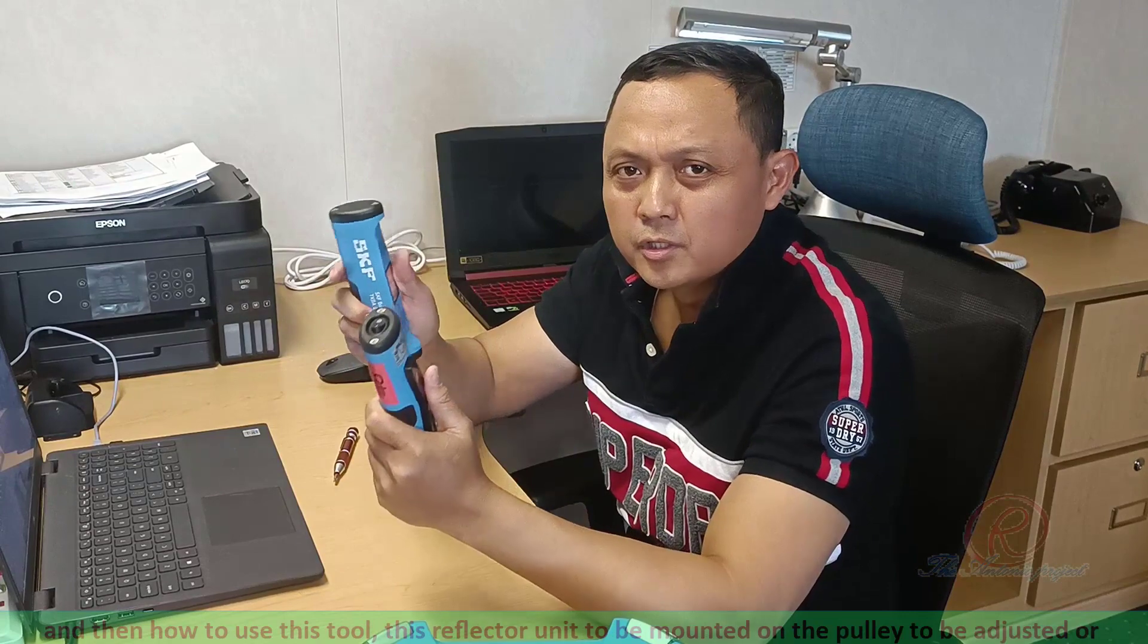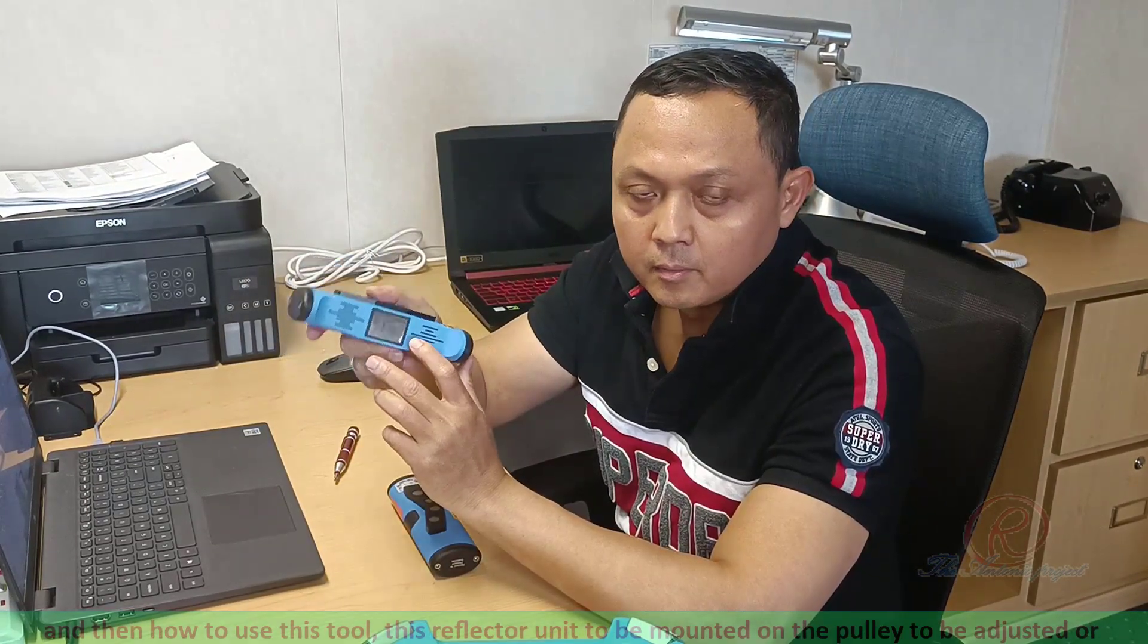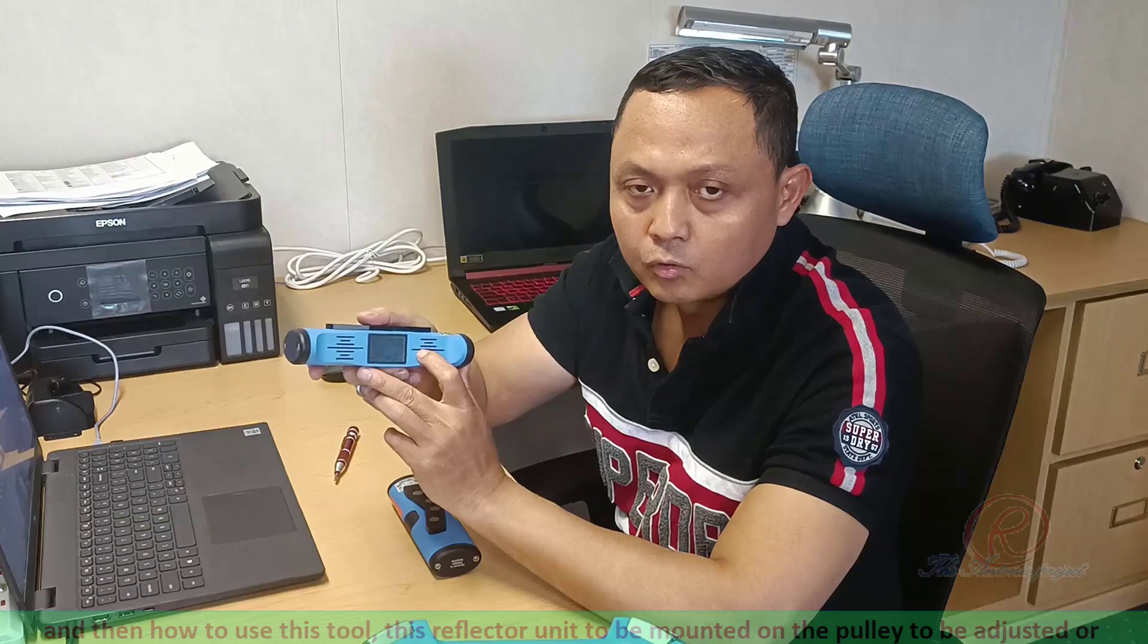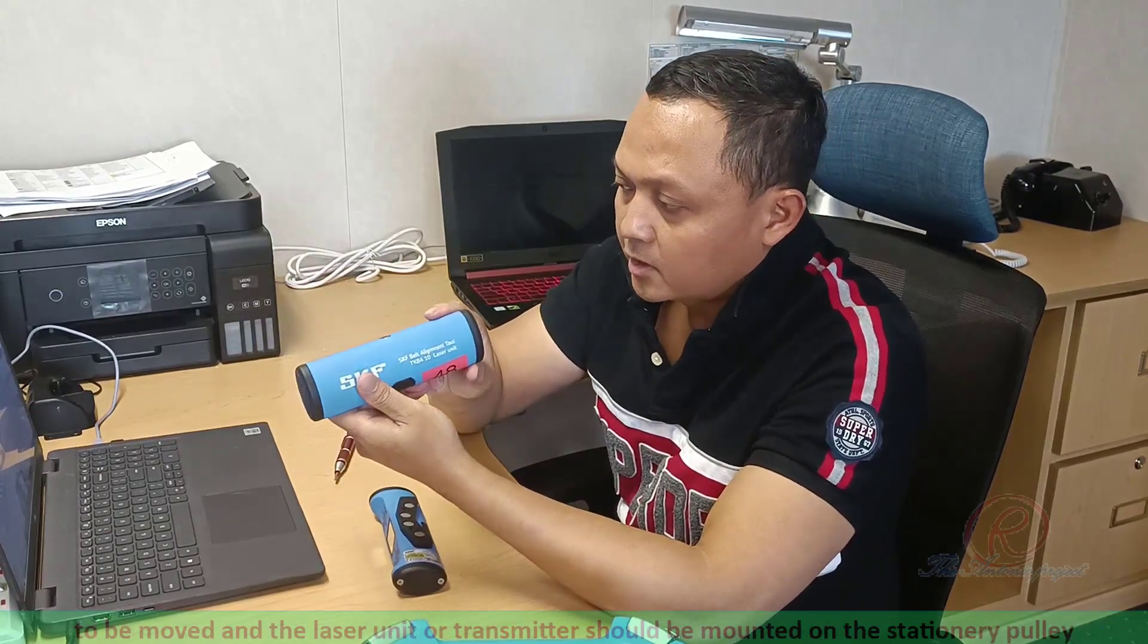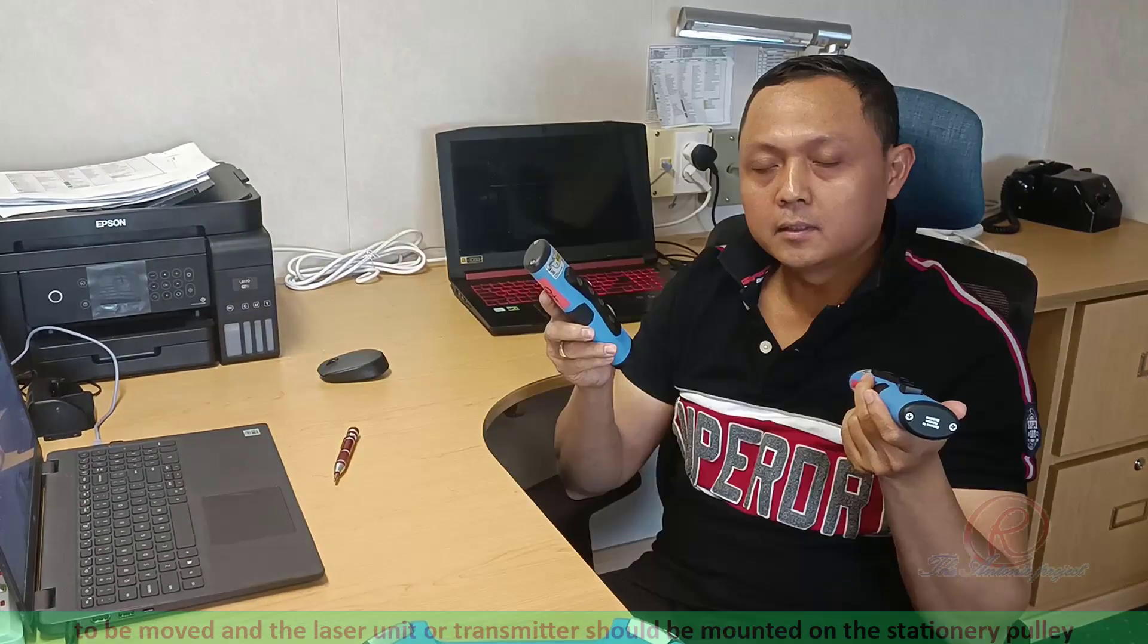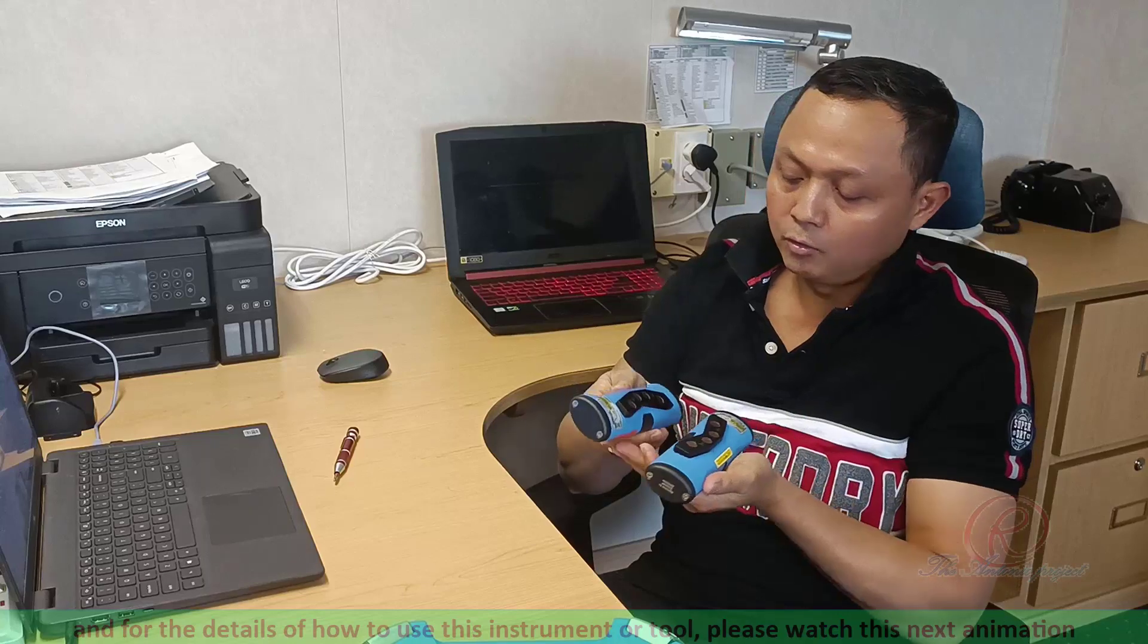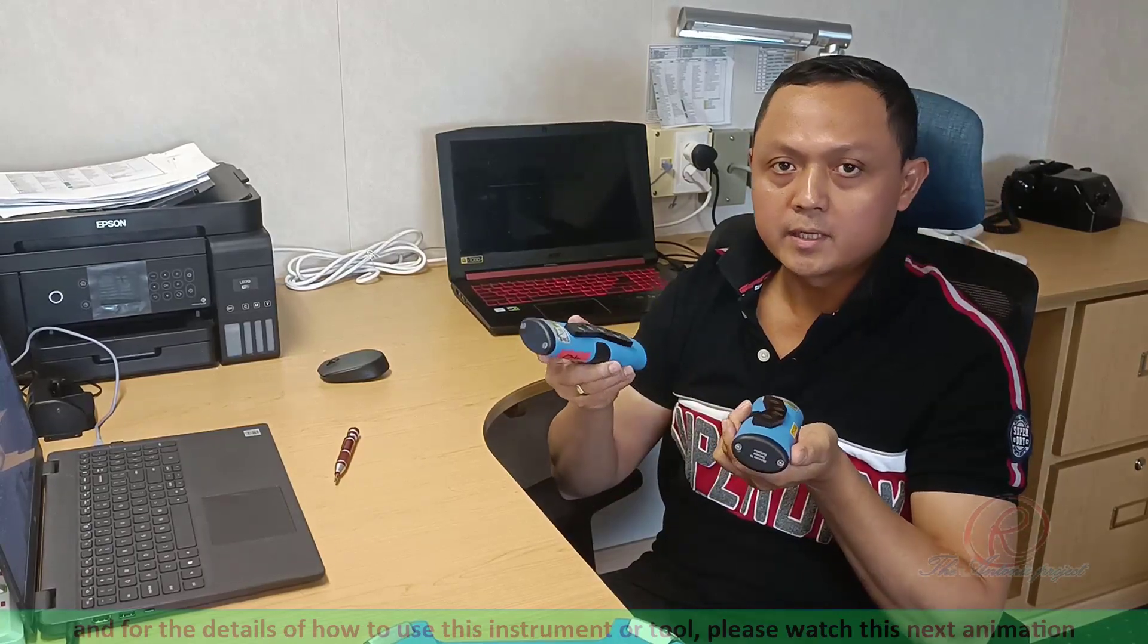How to use this tool? This reflector unit will be mounted on the pulley to be adjusted or to be moved. And the laser unit or the transmitter should be mounted on the stationary pulley. And for the details of how to use this instrument or tools, please watch this next animation.